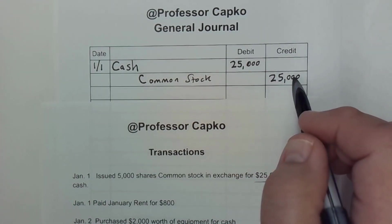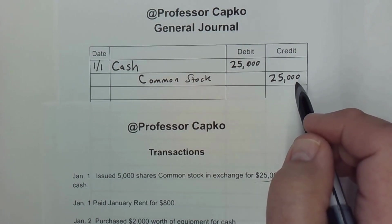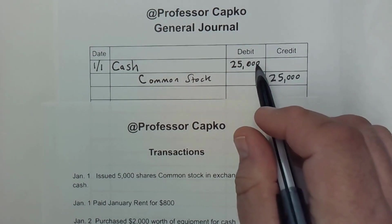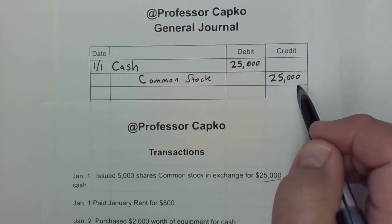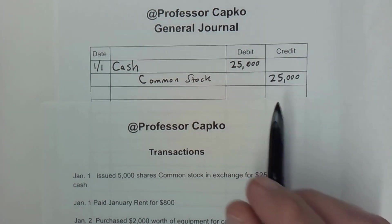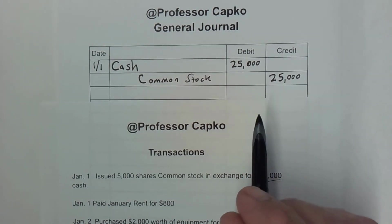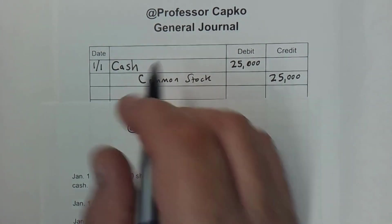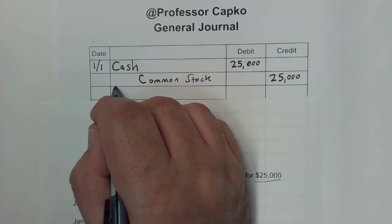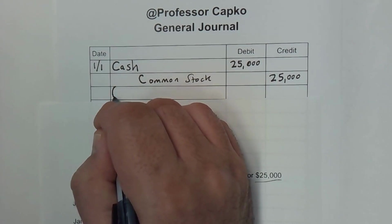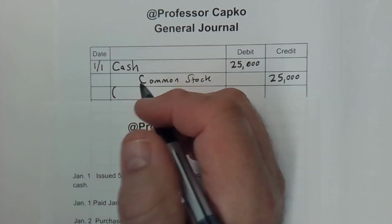There may be more than one debit. There may be more than one credit in a transaction. But ultimately, all your debits have to balance with all of your credits. If they don't, you've got something missing. It's good to go ahead and put a description here.